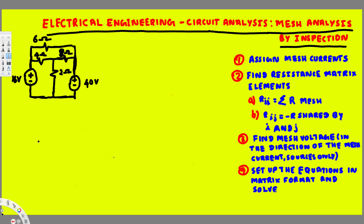In this video we are going to see how to find unknown currents using mesh analysis by inspection method. To do that we follow four steps. The first step is to assign mesh currents — we put mesh currents in each loop: let's call this one I1, this one I2, and this one I3.